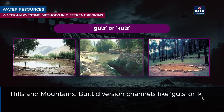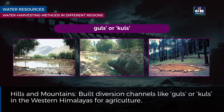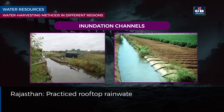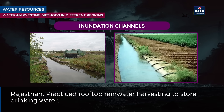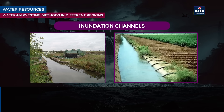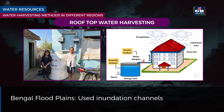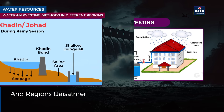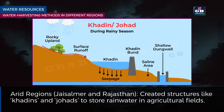Water harvesting methods in different regions: In hills and mountains, diversion channels called Guls or Kuls were built in the western Himalayas for agriculture. In Rajasthan, rooftop rainwater harvesting is practiced to store drinking water. In Bengal flood plains, inundation channels are used to irrigate fields. In arid regions like Jaisalmer, structures like Khadins and Johads are created to store rainwater in agricultural fields.